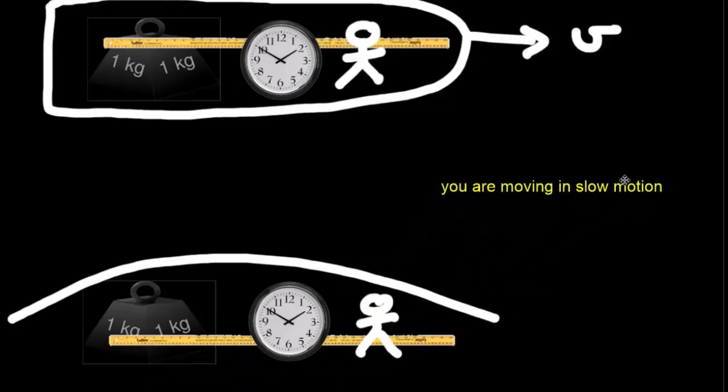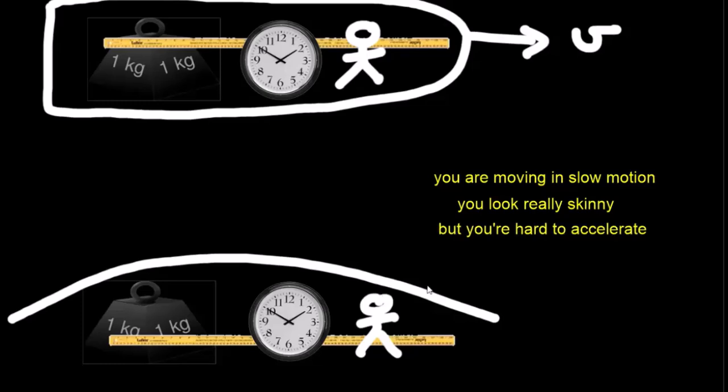What he would say is: Brother, my twin, you're moving in slow motion. Your clock is moving more slowly than mine. Twin, you look really skinny. Have you been eating well? Or he might say, your meter stick looks shorter than mine. And if he could shine some sort of laser and try to accelerate his twin brother, he would say, you're harder to accelerate. You've got more mass than I've got. Your one kilogram mass is heavier than my one kilogram mass.